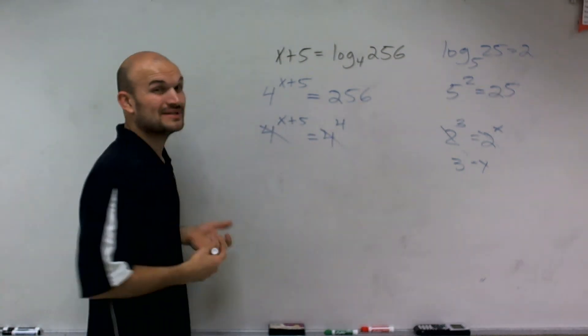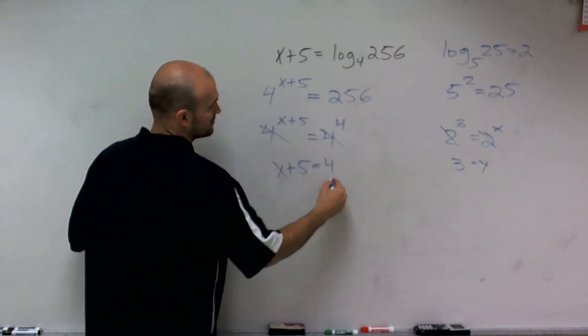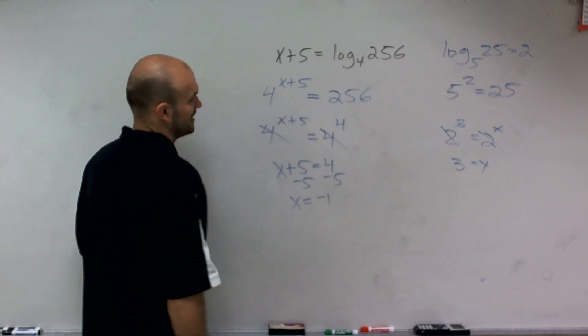Now I don't need those bases, and I can have x plus 5 equals 4, subtract 5, x equals negative 1.